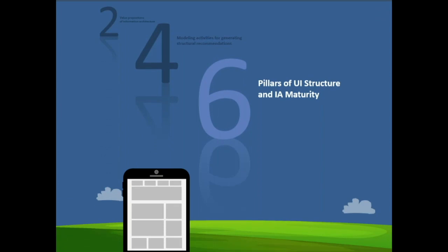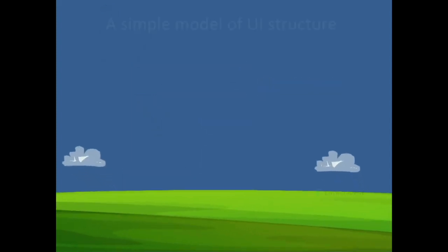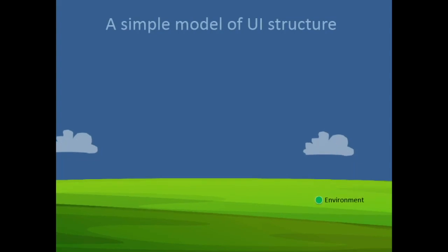This leads us to what I call the six pillars of user interface structure. But before I do that, I want to start with a simple model, and this model begins with an environment.